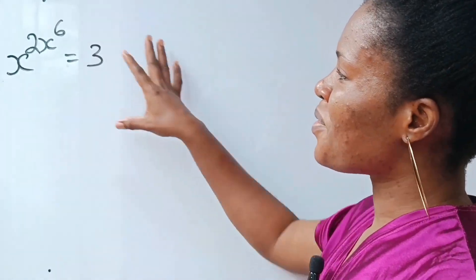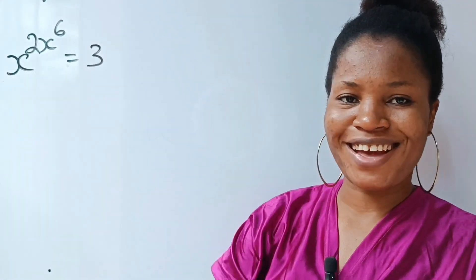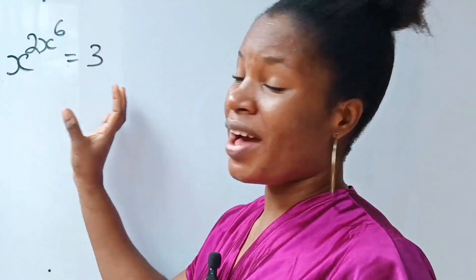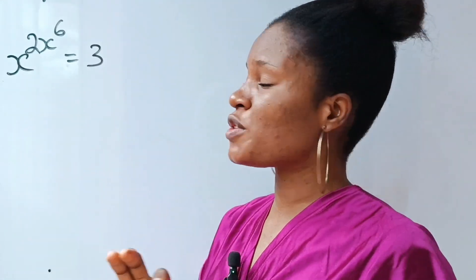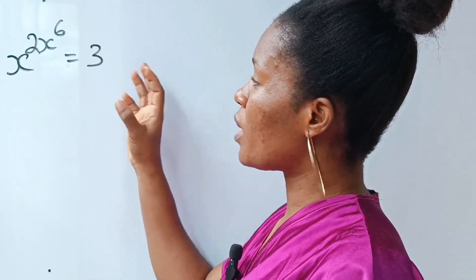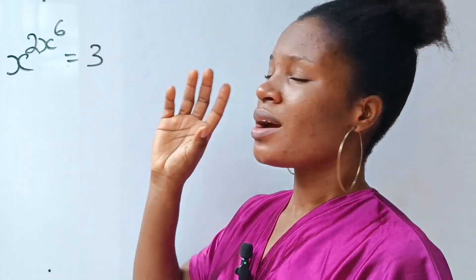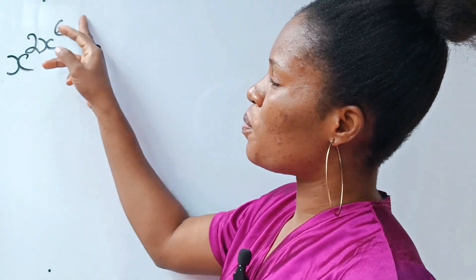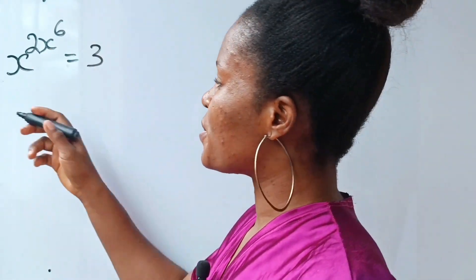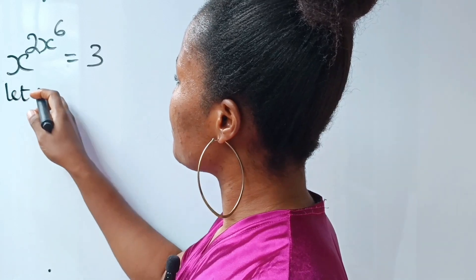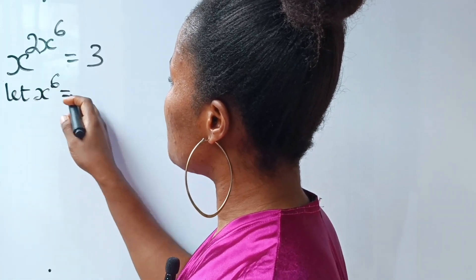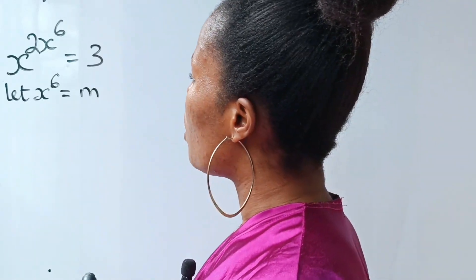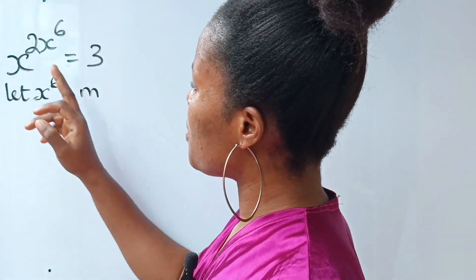Welcome to my channel. Let's quickly solve for the value of x. Whenever I see this kind of question, the first thing that comes to my mind is how do I simplify this. Looking at what we have here on the board, we can simplify further if we let x to the power of six equal m. Let's call it m.